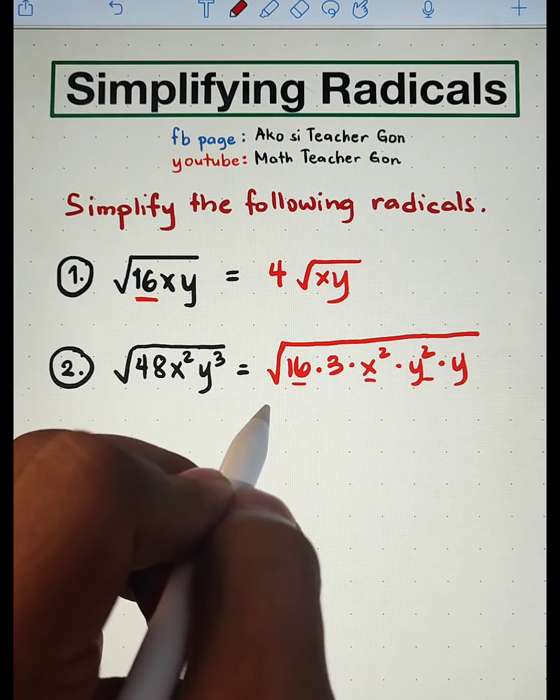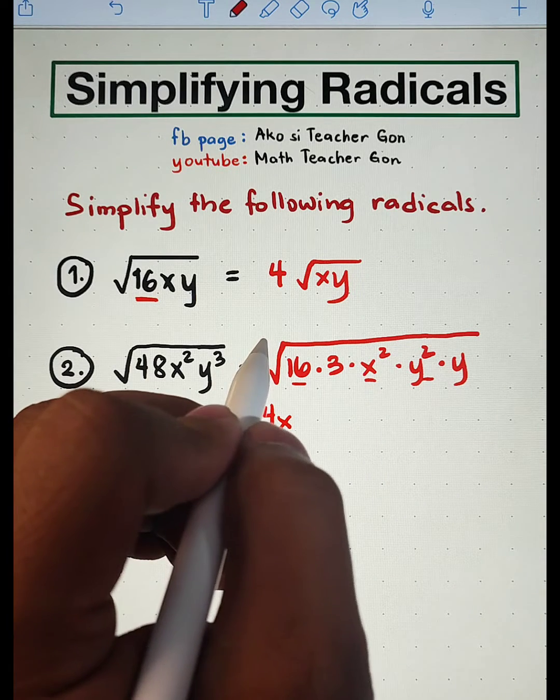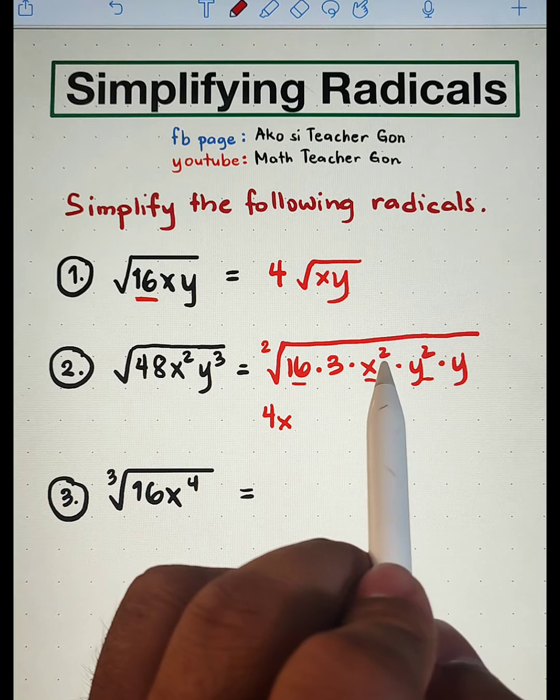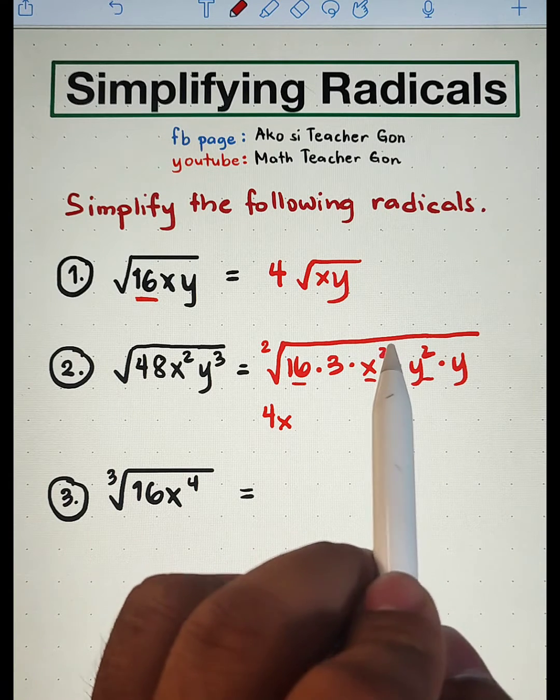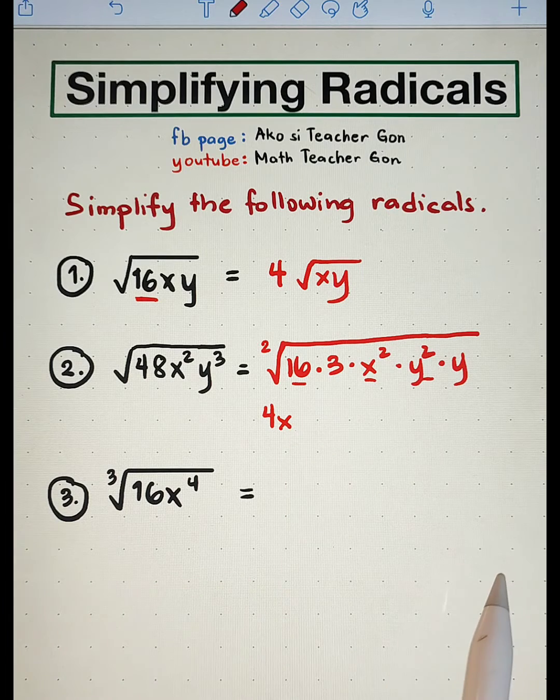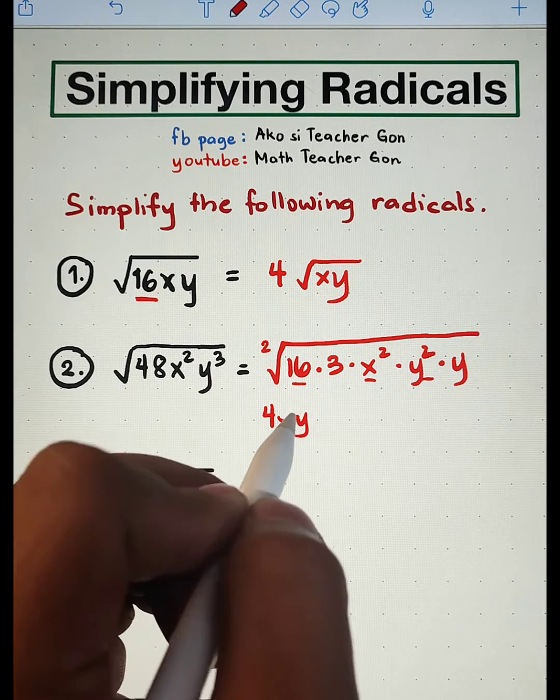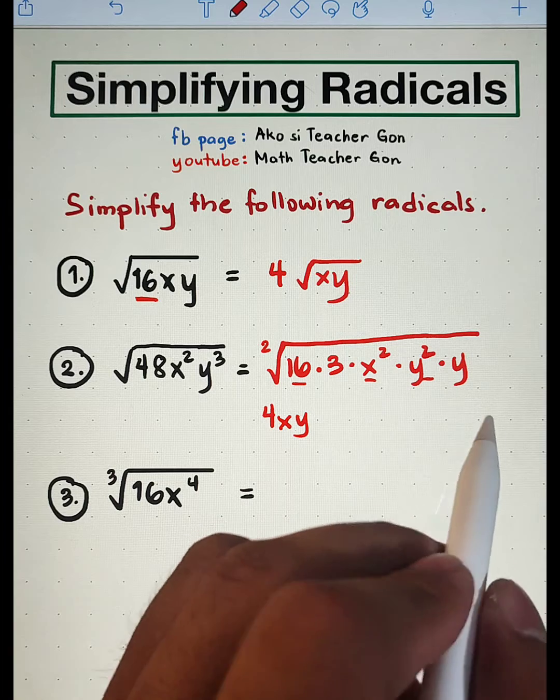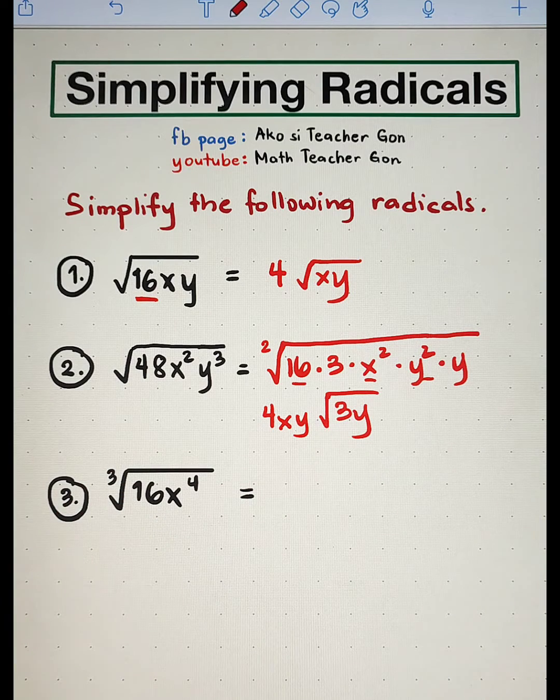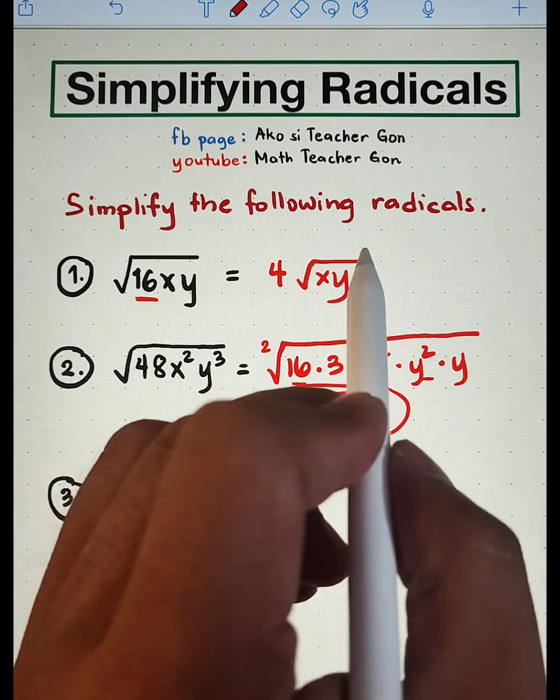The square root of 16 is 4. The square root of x squared is x. And by the way, the invisible index here is 2. So to get the square root of the variable, all you need to do is divide the exponent by the index. 2 divided by 2 is 1. Next, for the y variable y squared, the square root of y squared is y. And as you can see, 3 and y will remain inside the radical sign. Meaning, the correct answer for item number 2 is 4xy times the square root of 3y.